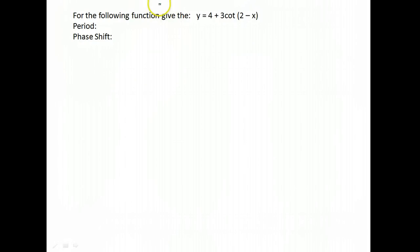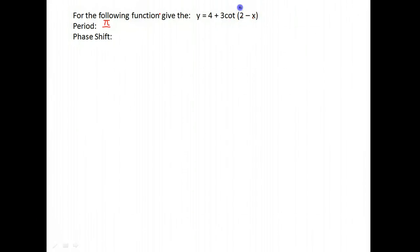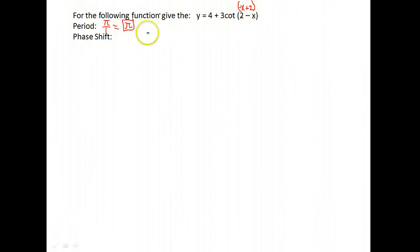Here we have cotangent. Cotangent's normal period is π. We have cot(2 - x), which we rewrite as cot(-x + 2). The number in front of x is negative 1, but we divide by its absolute value, which is 1, so the period remains π. For the phase shift, the number added to x was positive 2; write the opposite sign as negative 2, then divide by negative 1. Negative 2 divided by negative 1 is 2, so the phase shift is 2.